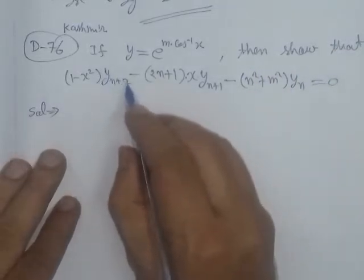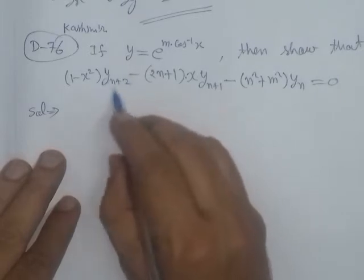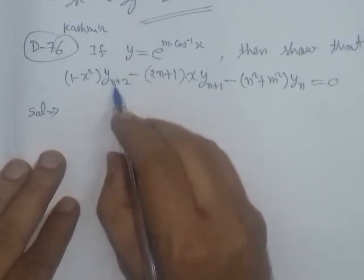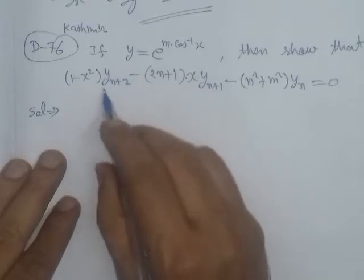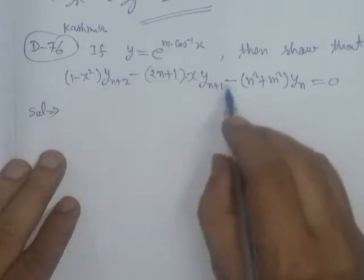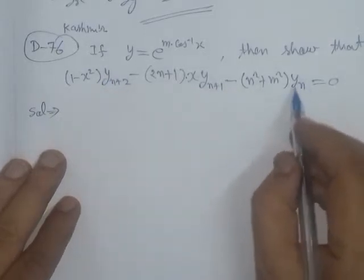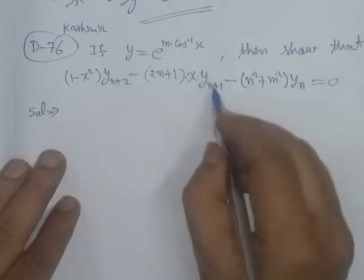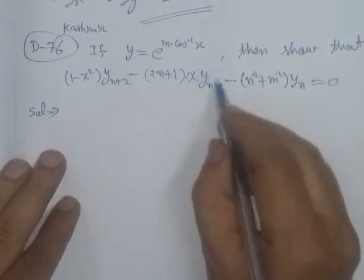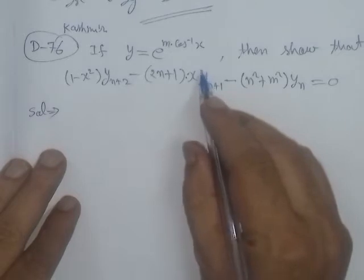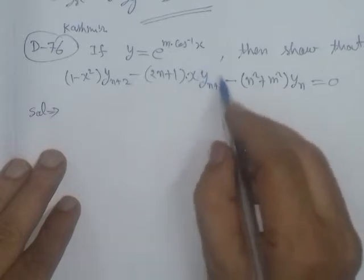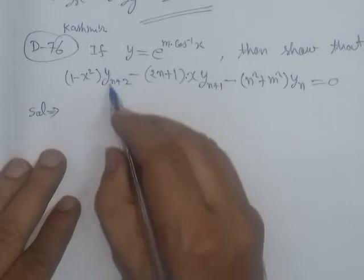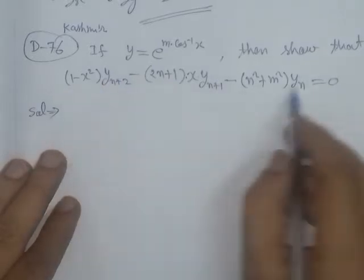Here, the suffix notation yₙ₊₂ means the (n+2)-th differentiation of y with respect to x. Similarly, yₙ denotes the n-th differentiation of y with respect to x, and yₙ₊₁ means the (n+1)-th differentiation of y with respect to x. This is what we have to prove.